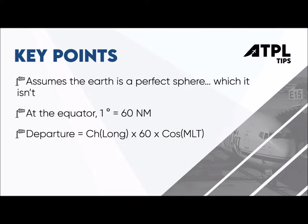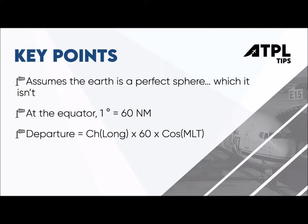The departure formula is: change in longitude multiplied by 60 multiplied by the cosine of mean latitude. At the equator, one degree is equivalent to 60 nautical miles. The departure formula as stated is: change in longitude × 60 × cos(mean latitude). This gives east-to-west distance between two points along the same line of latitude, converting the change in longitude from degrees into nautical miles.